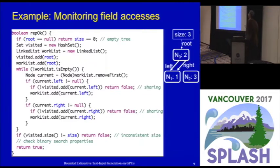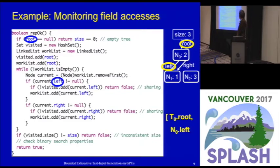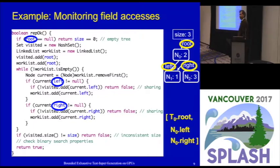Here is an illustration of the basic Korath search and how it backtracks. Say you run RepOK on a faulty input. Korath monitors the field accesses RepOK makes and uses them to create the next candidate. The first field accessed is root, then the left of n0. Everything is fine so far. Then RepOK accesses n0.right. At this point, sharing is detected and RepOK returns false. For systematic search, Korath backtracks on the last accessed field.